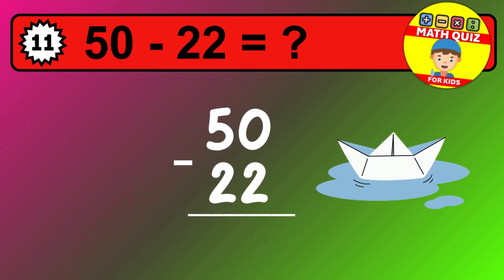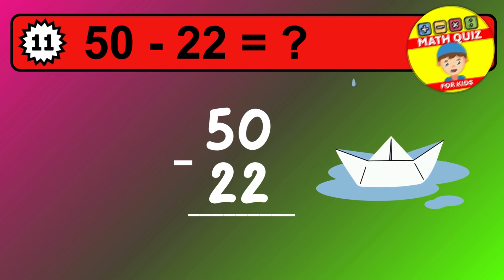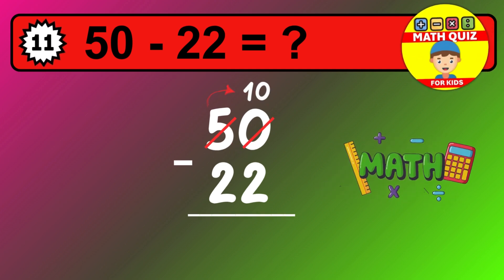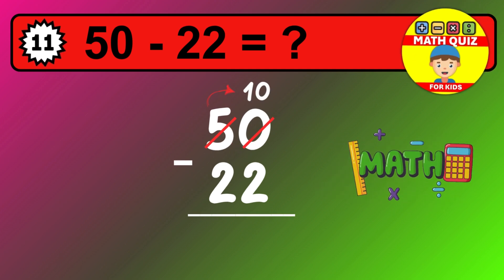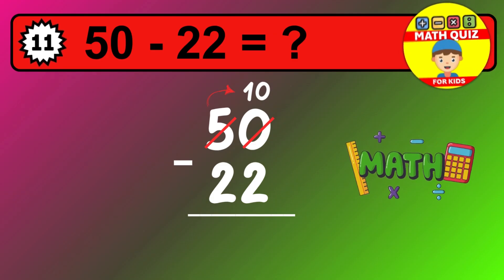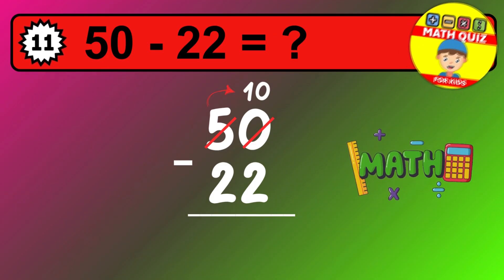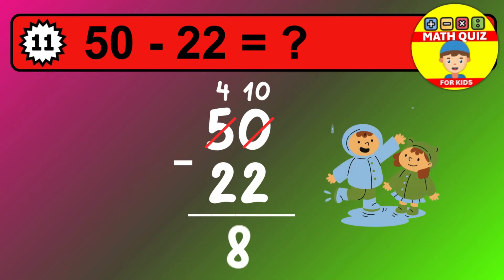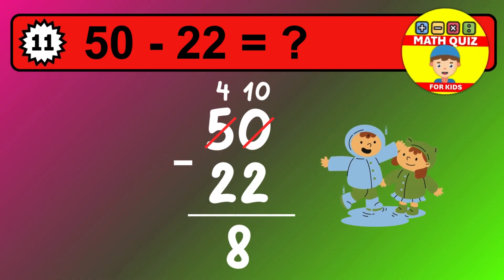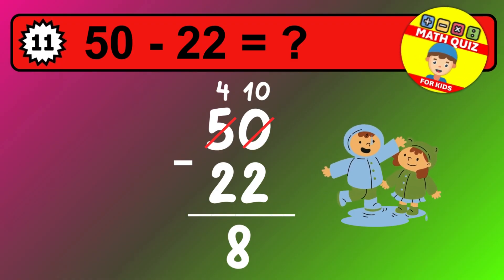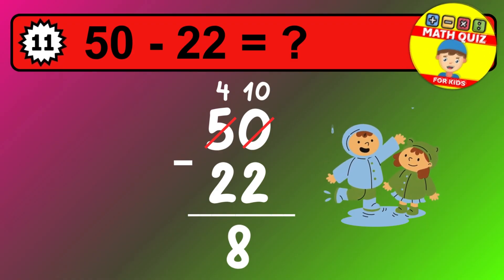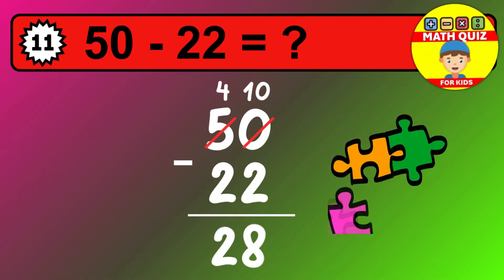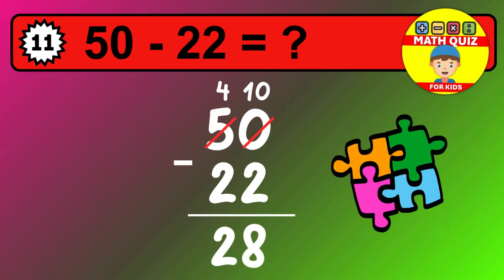Let's solve this step by step. We start with the units. 0 minus 2 is not possible, so we need to regroup. We take one 10 from the tens column. Now we have four tens and the units become 10. Now we subtract. 10 minus 2 is 8. Then we go to the tens. 4 minus 2 is 2. The final answer is 28.